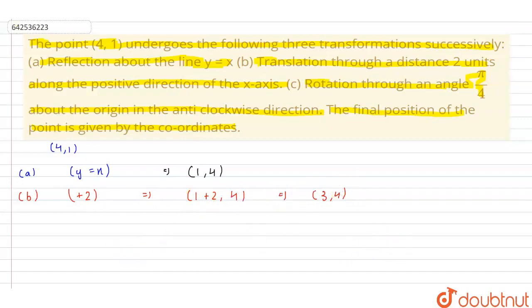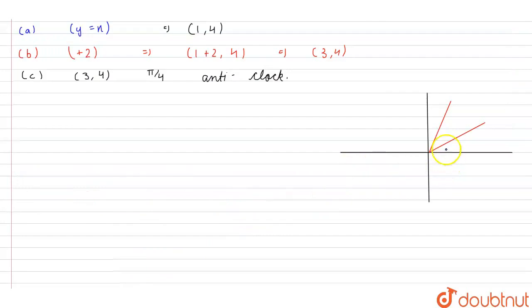Now in the end, the point (3,4) is rotated about origin by an angle π by 4 in the anti-clockwise direction. To understand this better, we will try to draw a figure. This is the required figure where this is the x-axis and this is the y-axis.